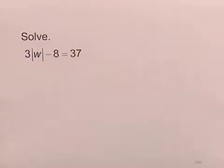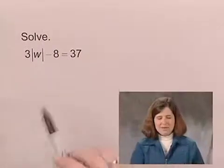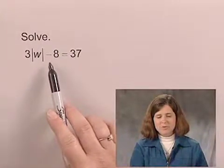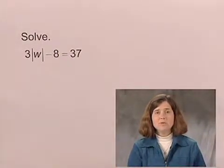We now solve an equation that contains an absolute value sign. We'll solve the equation 3 times the absolute value of W minus 8 equals 37.